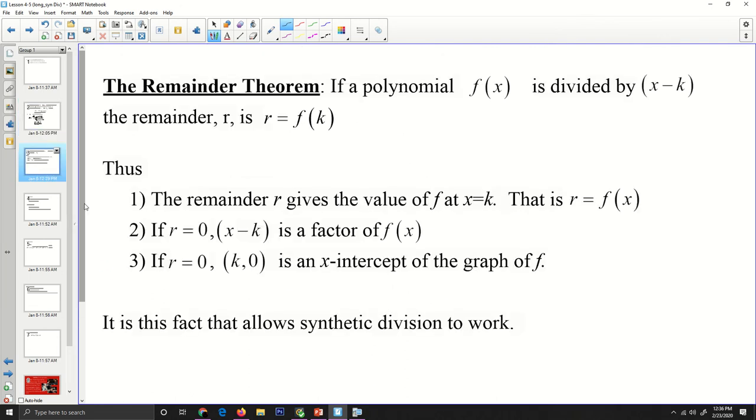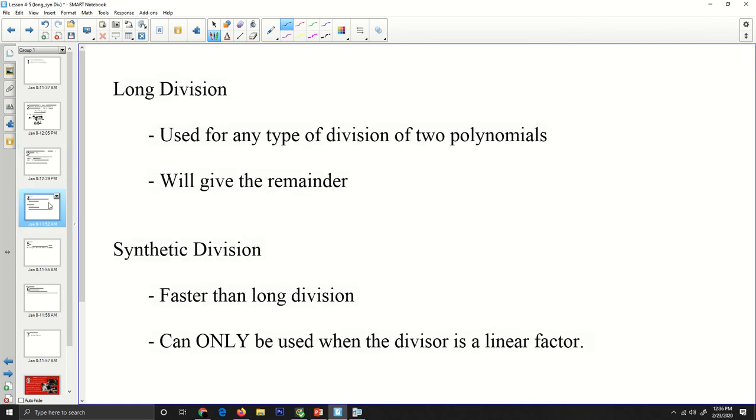The remainder theorem: if a polynomial f(x) is divided by some linear expression x minus k, then the remainder r is the value that you would get if you plugged in that k into the function, which is kind of a cool result. It's what allows us to do synthetic division. The remainder r gives you the value of f at x equals k. If r equals 0, then we can say x minus k is a factor of f(x). And if r equals 0, then k comma 0 has to be an intercept of the graph of f.